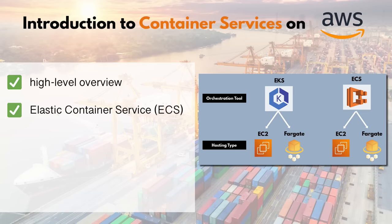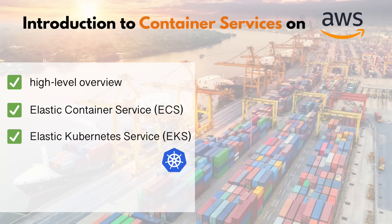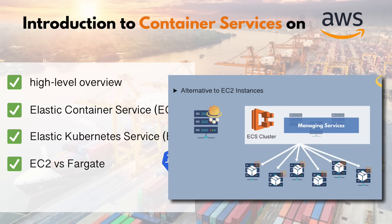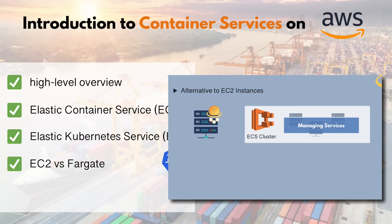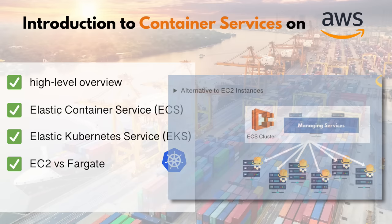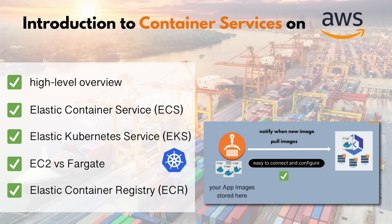We will see what ECS — Elastic Container Service — is and what it's used for. Then we'll compare it and talk about EKS, which is Elastic Kubernetes Service. We will also see different ways of running containers with EC2 or AWS Fargate. And finally, we will see the ECR service, which stands for Elastic Container Registry.